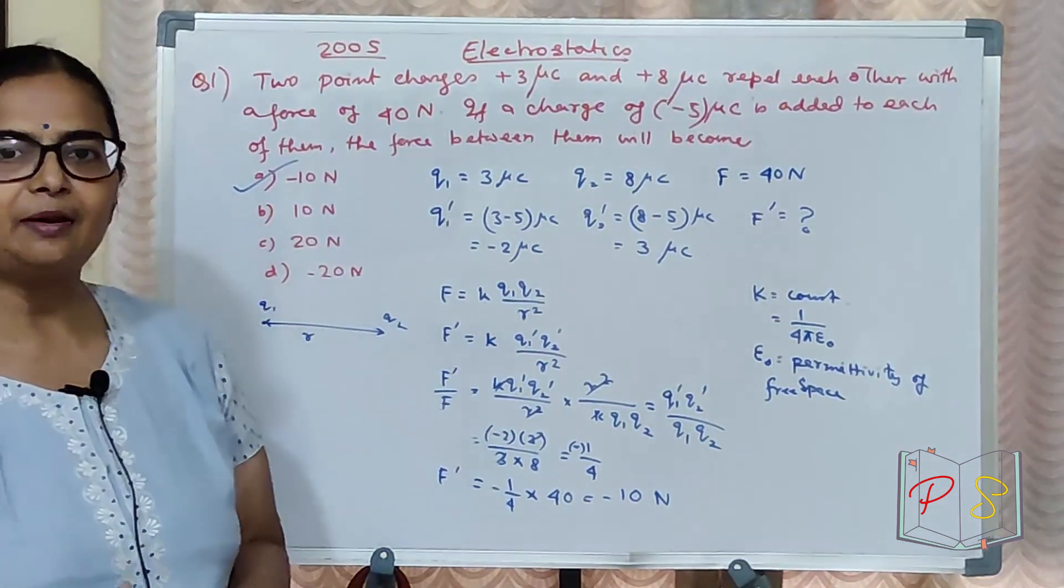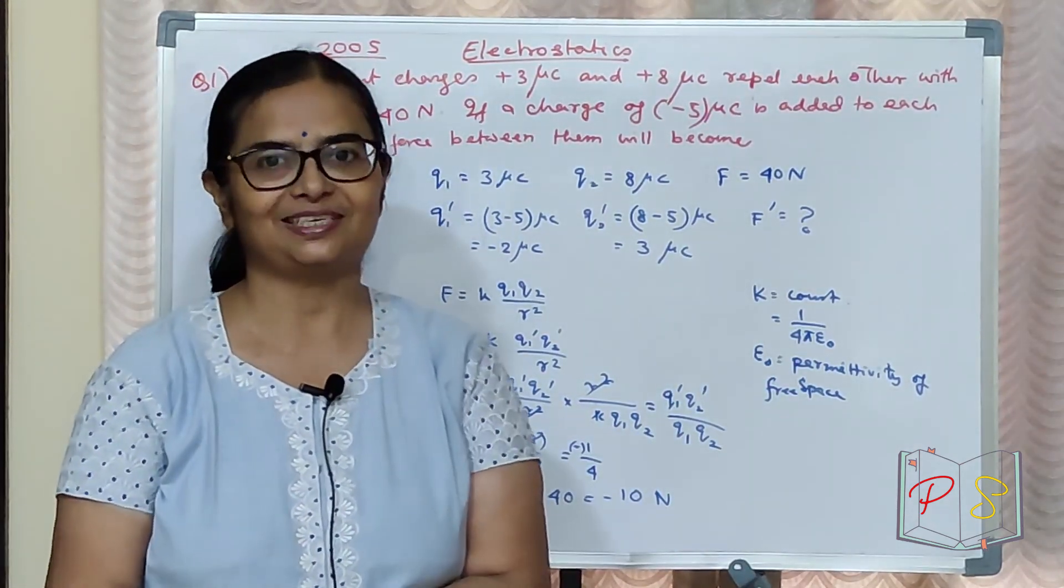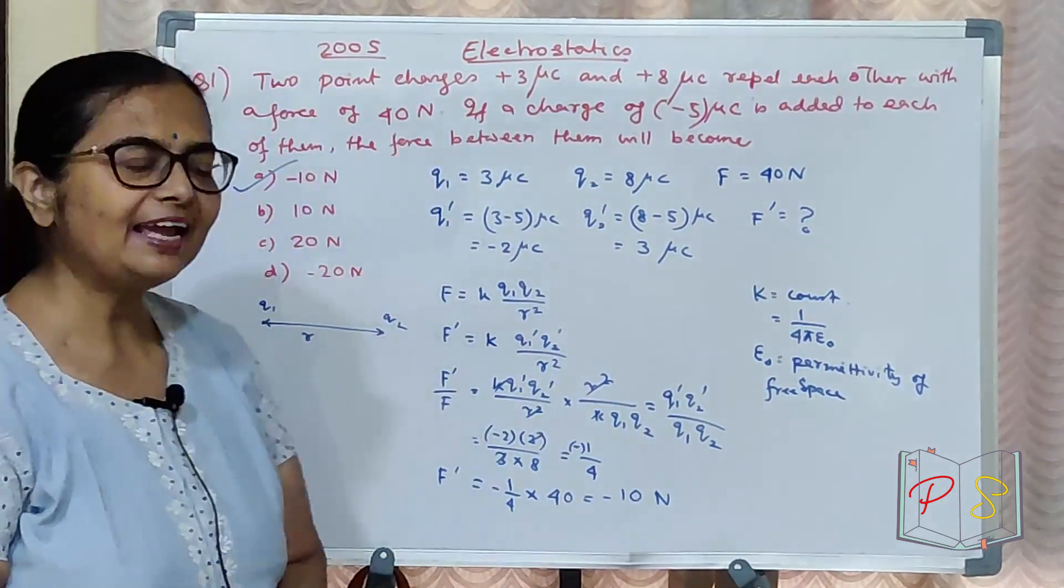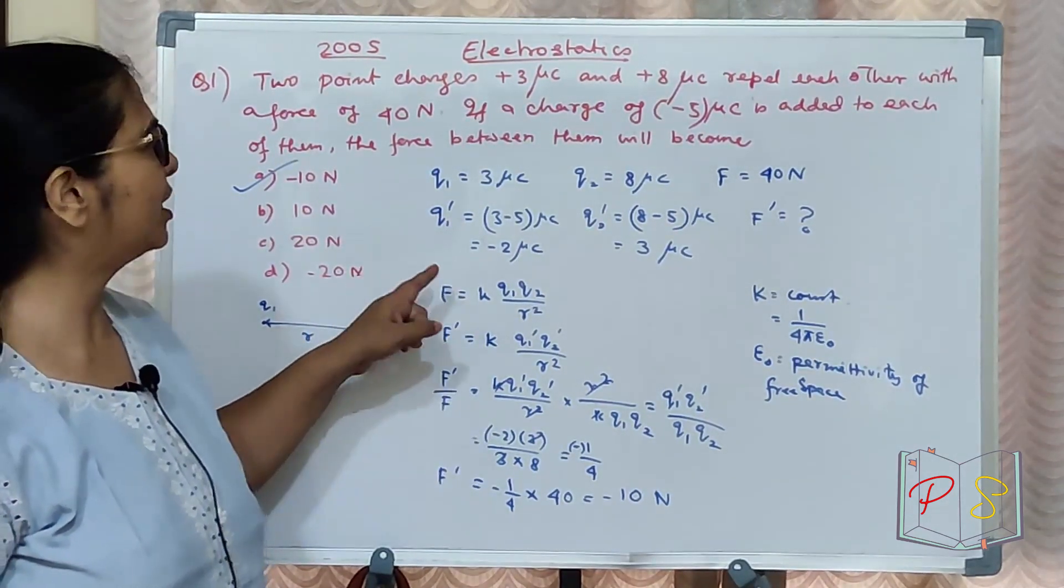Charges became different. Calculate F and F dash. K is a constant, don't worry much. We'll discuss K's value when it comes in a question. Okay? Understood how to do this?